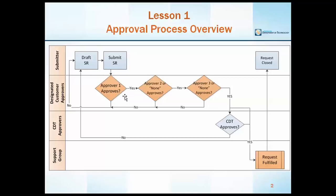This second swim lane represents the designated approvers and their alternates for the submitter's department. The amount of approvals needed could vary between 1 and 3 depending on the specific type of service request and the submitter's department's internal approval process. These approvers have the option to approve or reject a service request. We'll cover how a submitter should handle a rejected service request later in this video.